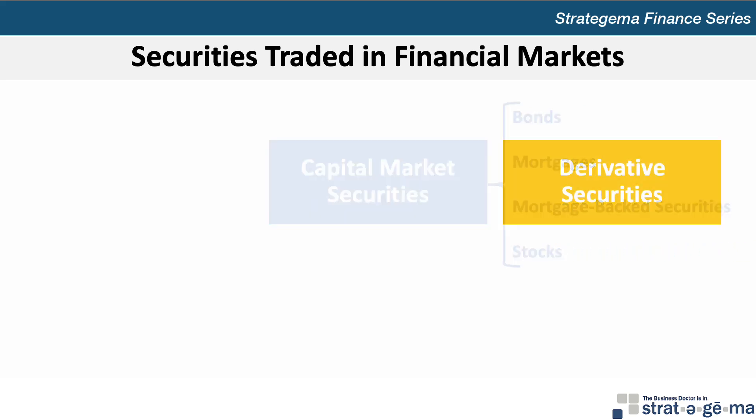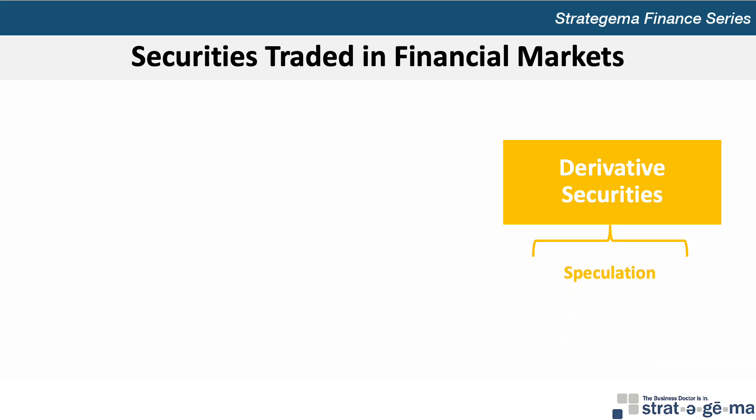Like money market and capital market securities, derivative securities are also traded in financial markets. Derivative securities are financial contracts whose values are derived from the values of underlying assets, such as debt securities or equity securities. Many derivative securities enable investors to engage in speculation and risk management.